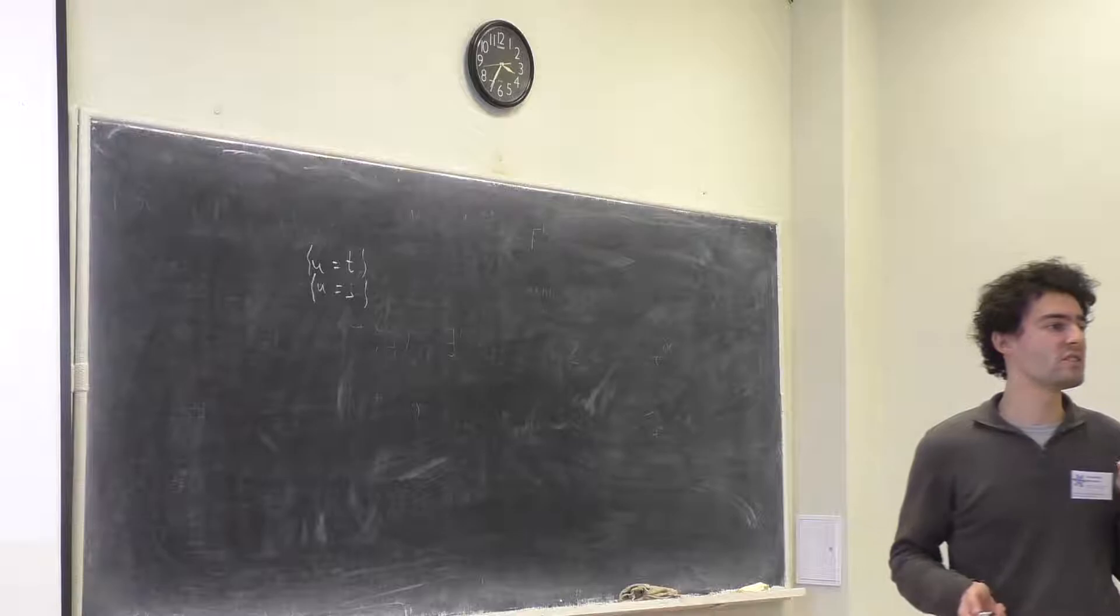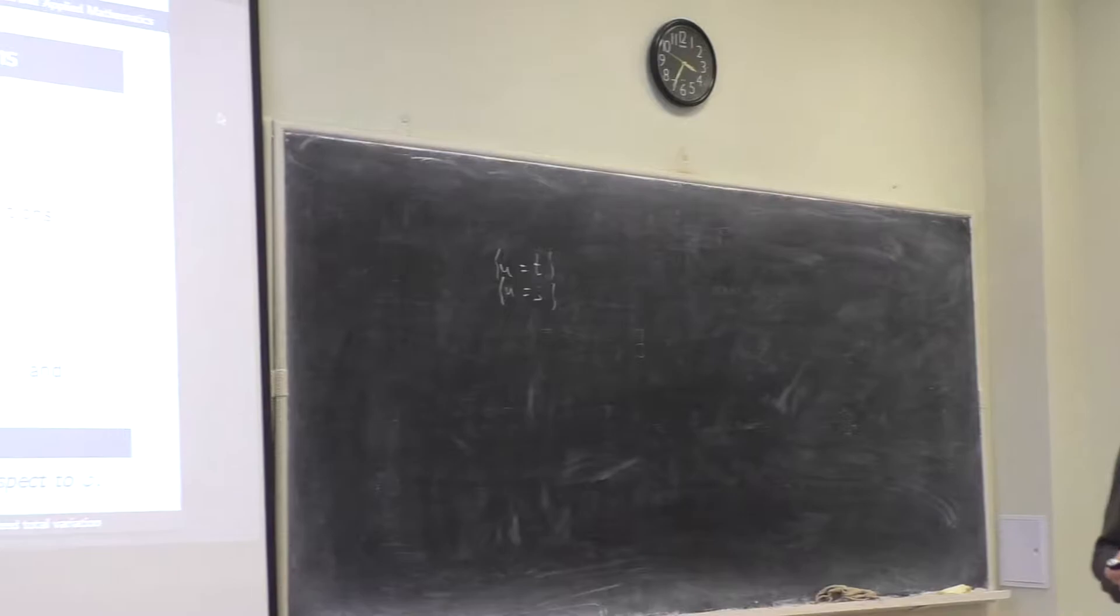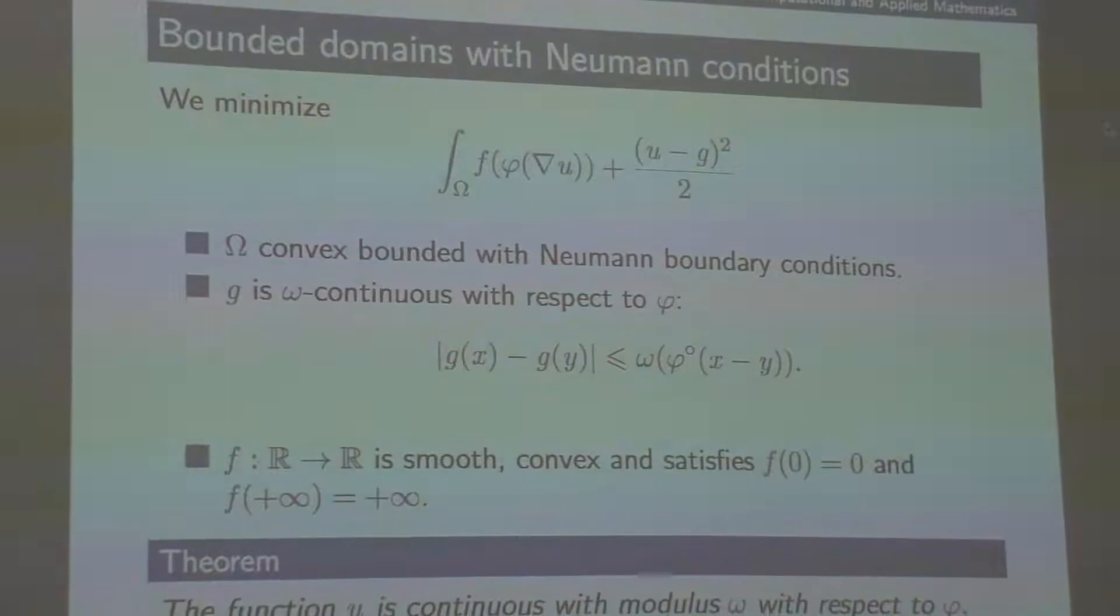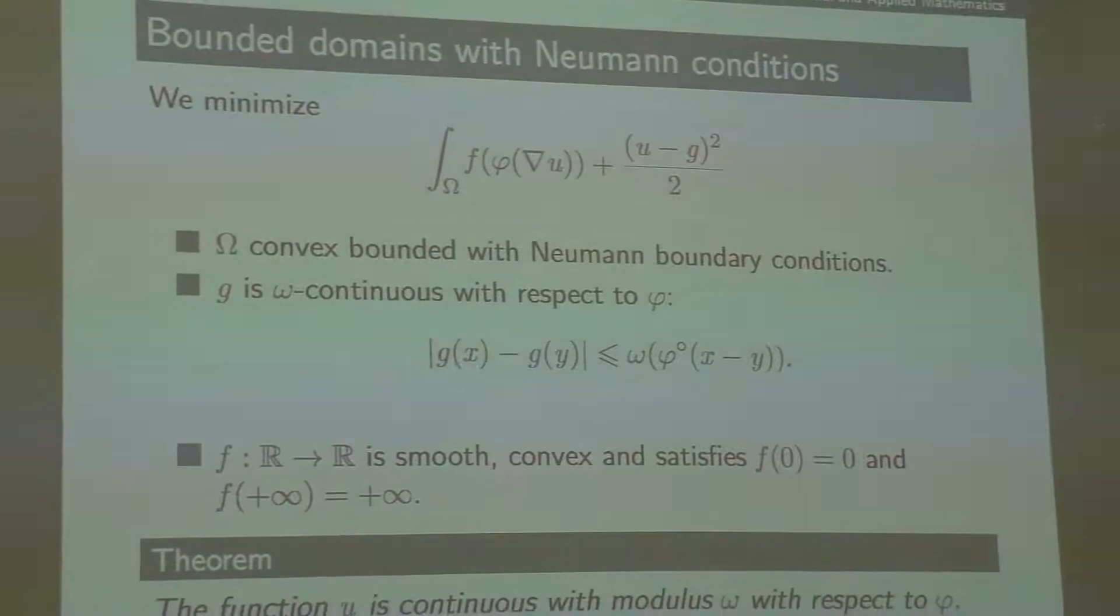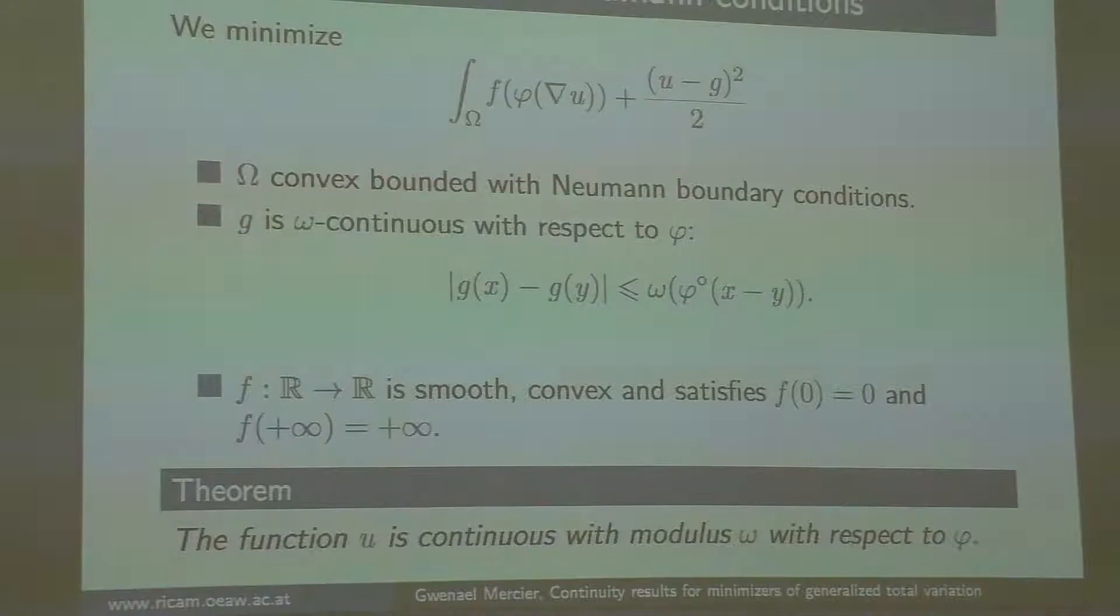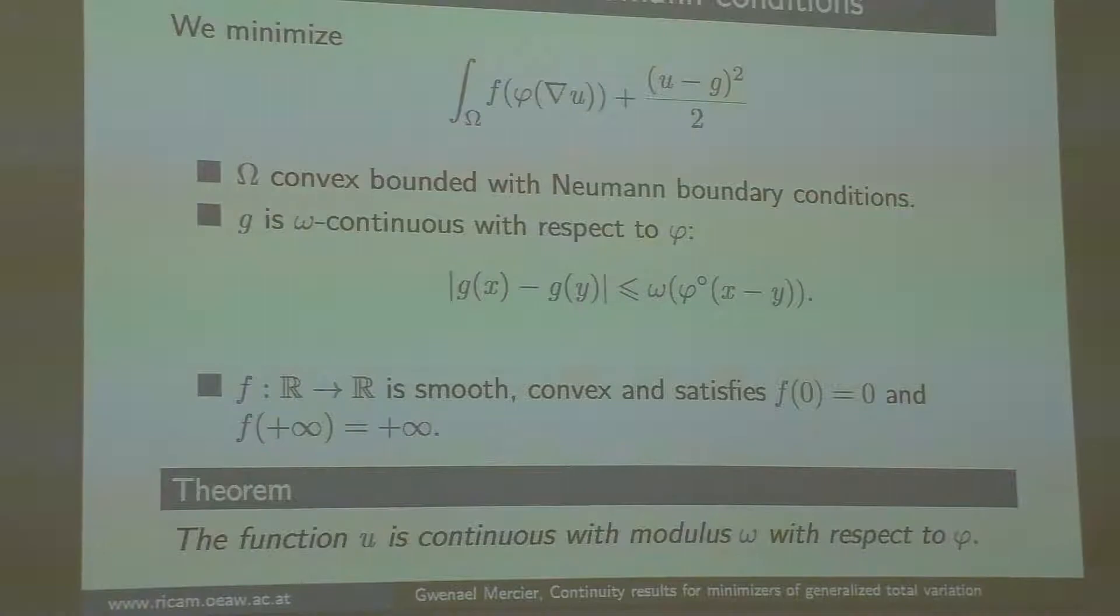Because if u is not continuous, it means exactly that you can go from u smaller than s to u equals t. That's why geometry is a fundamental tool in our analysis. Now I will state two theorems I prove in this sense. We managed to prove that if you add the condition bounded convex domain and Neumann boundary conditions, then you can really have the full result. Forget about the f here, you can think it's the identity, but you could do a bit better. If g has a modulus of continuity, then u has the same modulus of continuity. That's a very strong result, but it requires to be on a bounded domain with Neumann conditions.